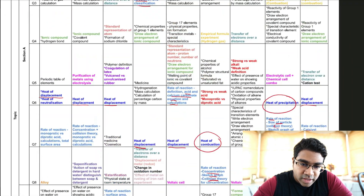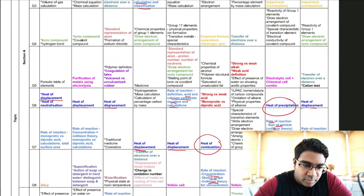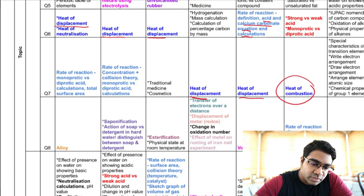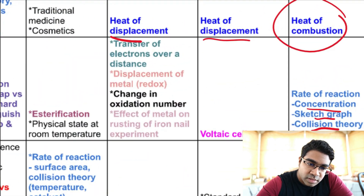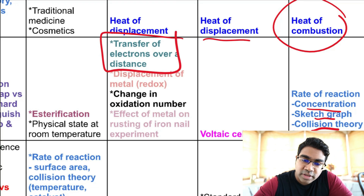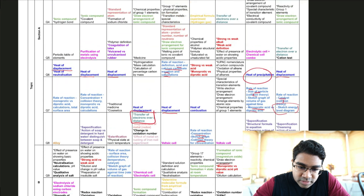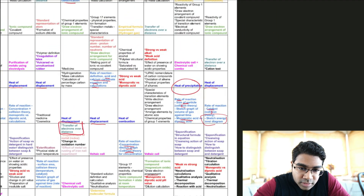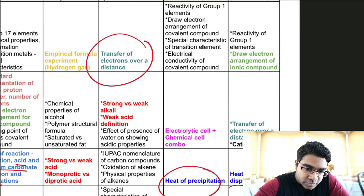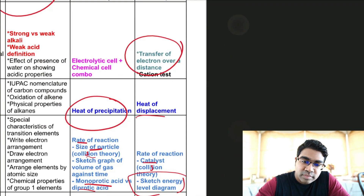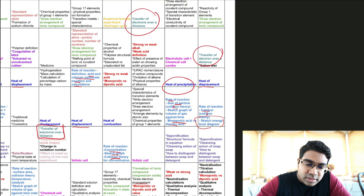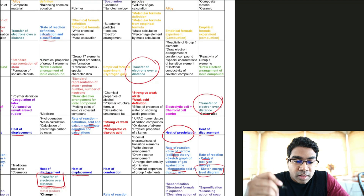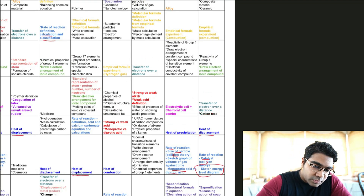In Section A, thermochemistry appears in almost every single state — most of it was heat of displacement, with one heat of combustion and one heat of precipitation. Please make sure you are on top of your calculations for heat of displacement, your definitions, and what happens when you replace the metal with another metal and how that affects the value for the heat of displacement. There are also quite a few occurrences of transfer of electrons over a distance — the YouTube experiment — and redox is another recurring topic.